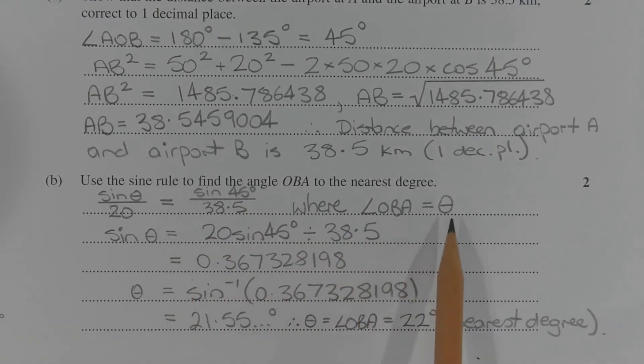Multiplying both sides of this equation by 20 to make sine theta the subject, we get sine theta is equal to 20 times sine 45 degrees divided by 38.5, which equals 0.367328198.